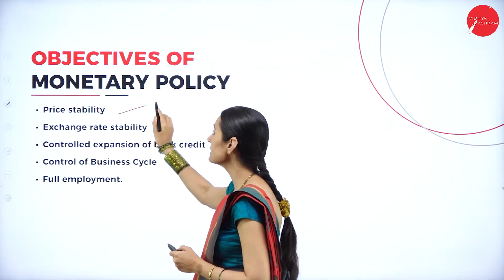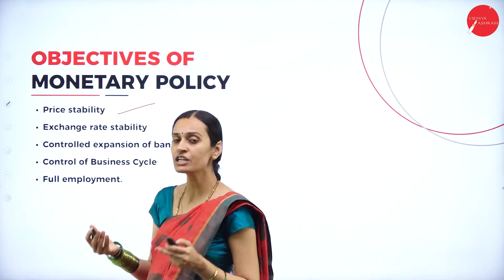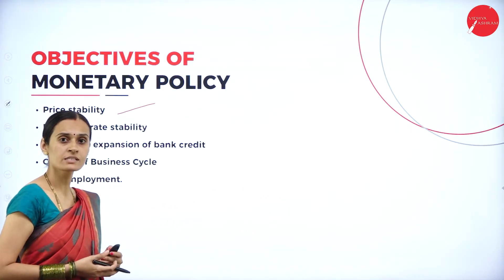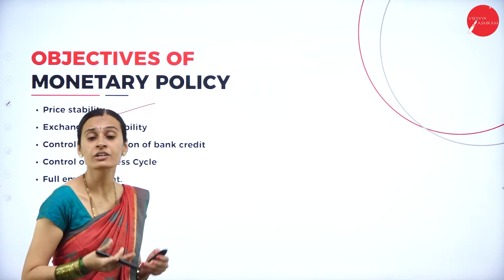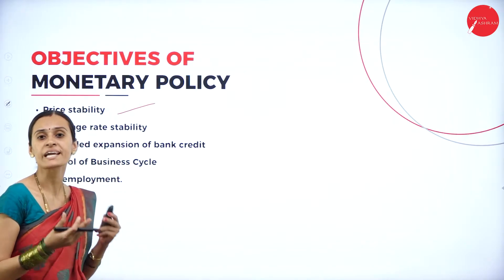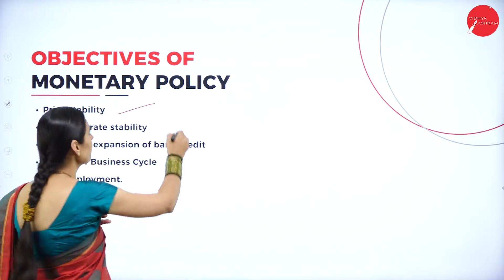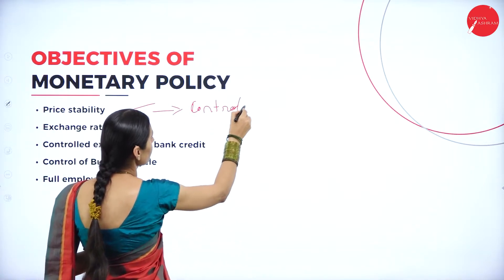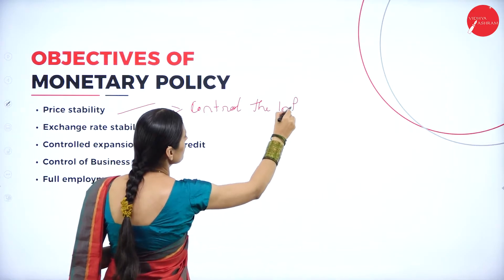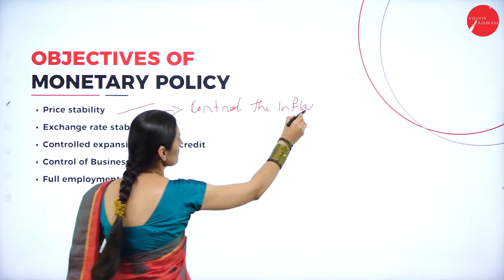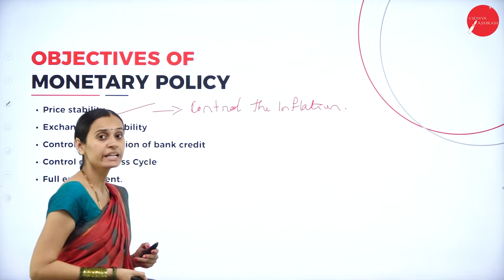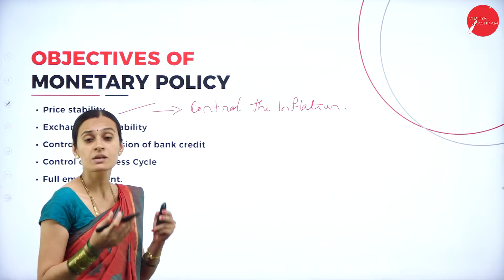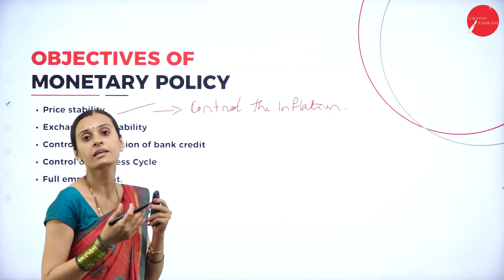The first objective is price stability. Inflation is a common phenomenon — the rising of the general price level in the economic system, or the decreasing in the value of money and increasing supply of money. To control inflation pressures or deflation situations is considered as achieving stability in the economic system.